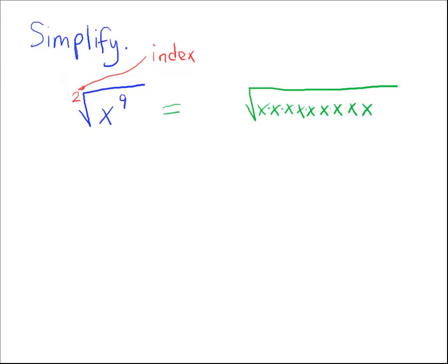What am I doing with the x to the 9th? Well, because the index is a 2, what I'm going to do is I'm going to look for identical pairs. So here's a pair of x's. Here's another pair of x's. So I'm just going to circle a bunch of pairs of x's. And do you see that this last one over here doesn't have a pair? There's no identical pair.